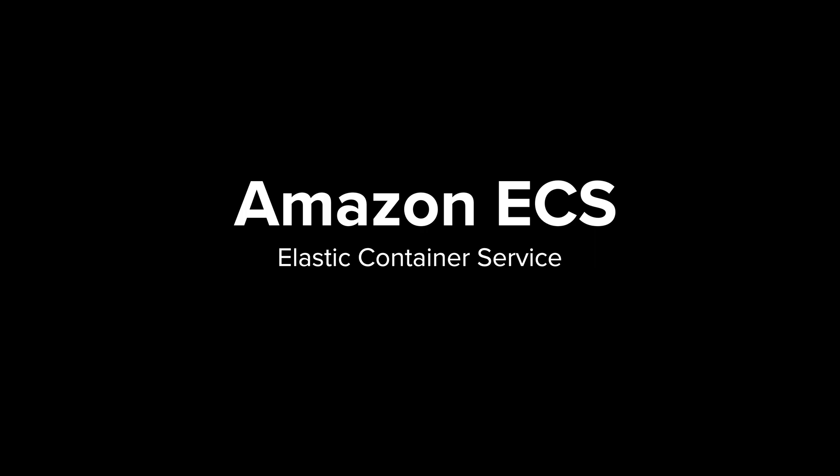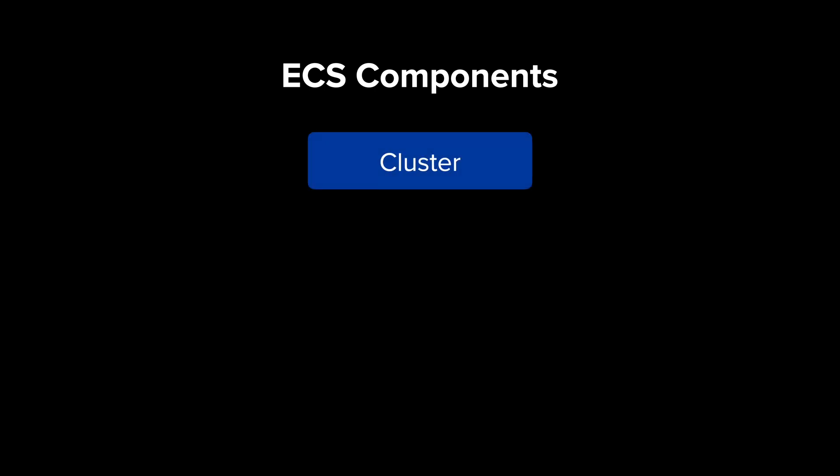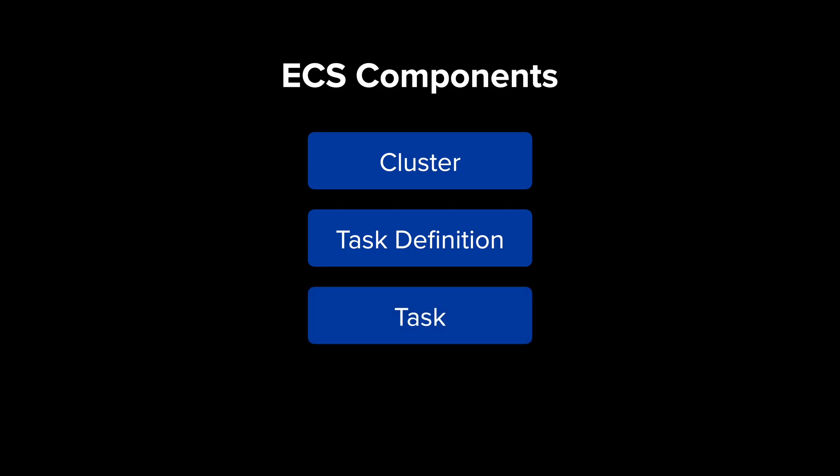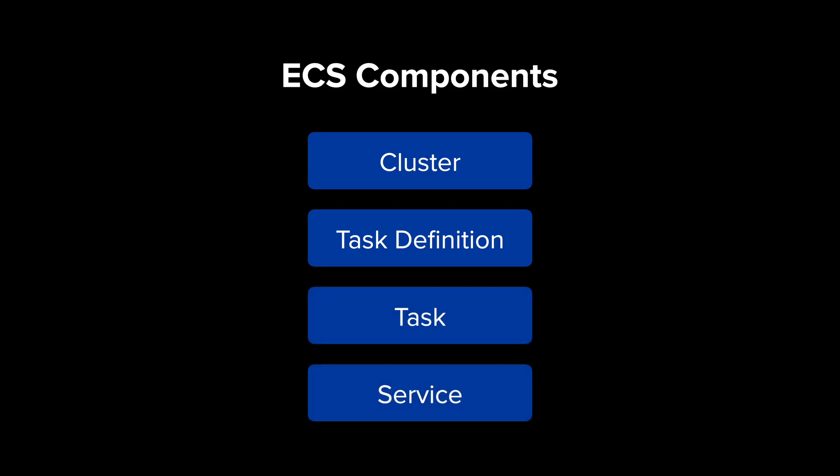Let's begin by understanding the core components of Amazon ECS. There are four core components you need to understand. First is the ECS cluster. Second, ECS task definition. Then, ECS task. And ECS service. In ECS, all these components work together to define what your containers do, where they run, and how they're managed efficiently.